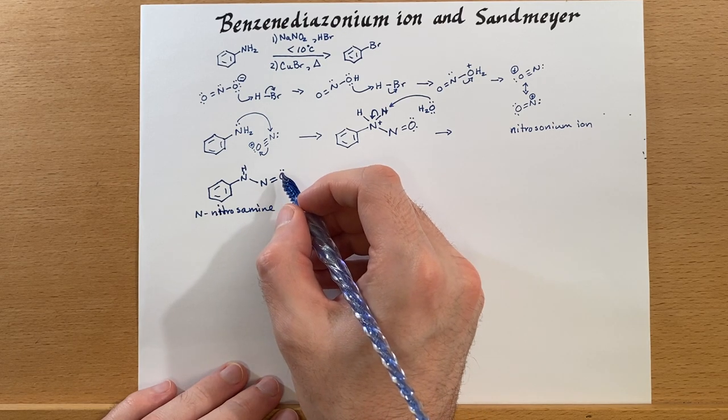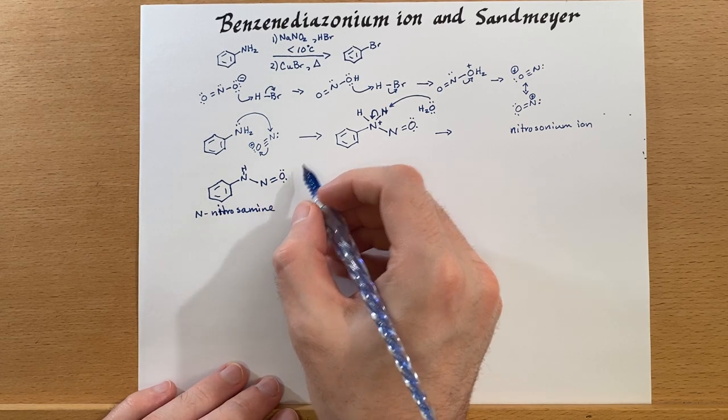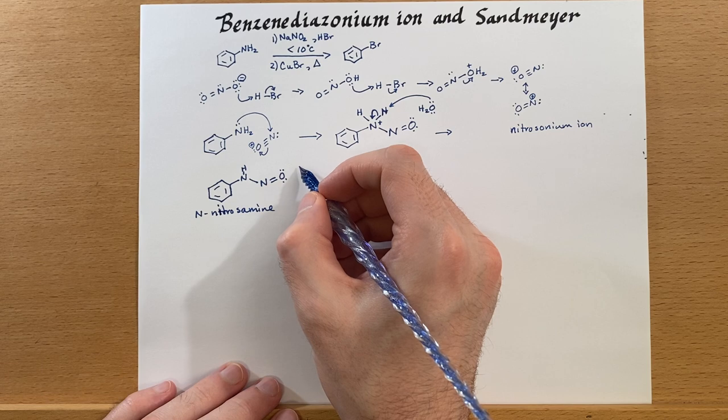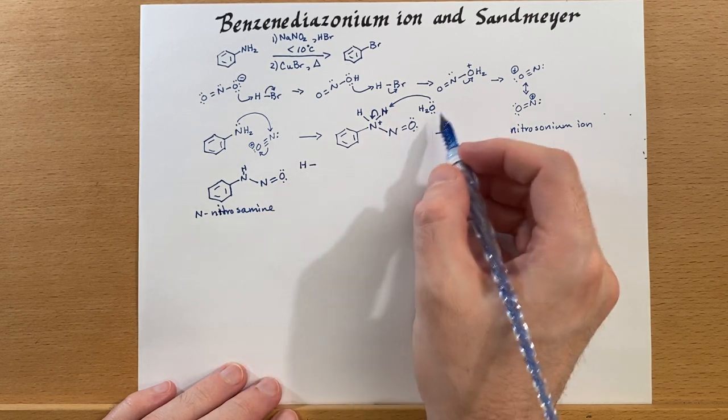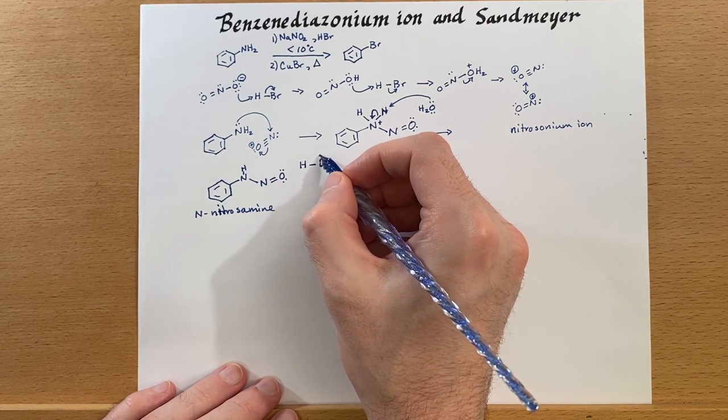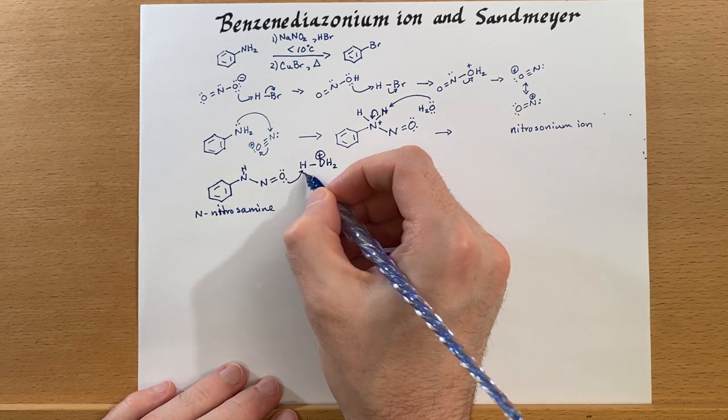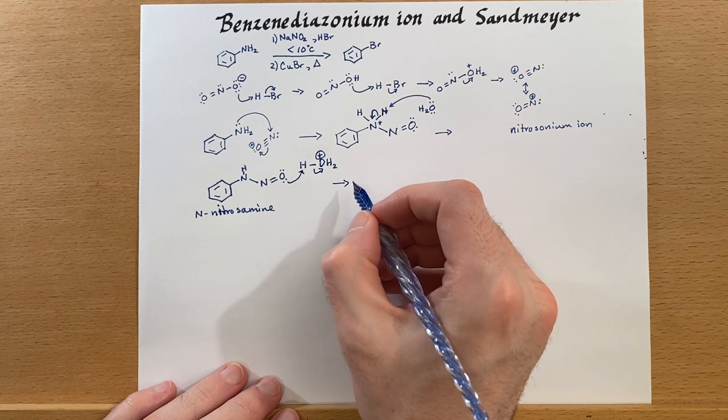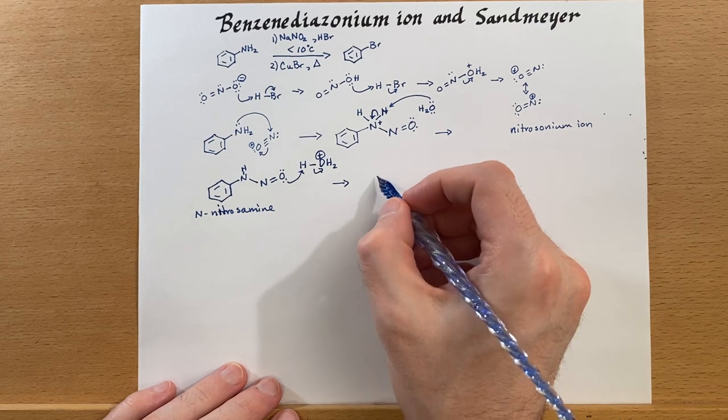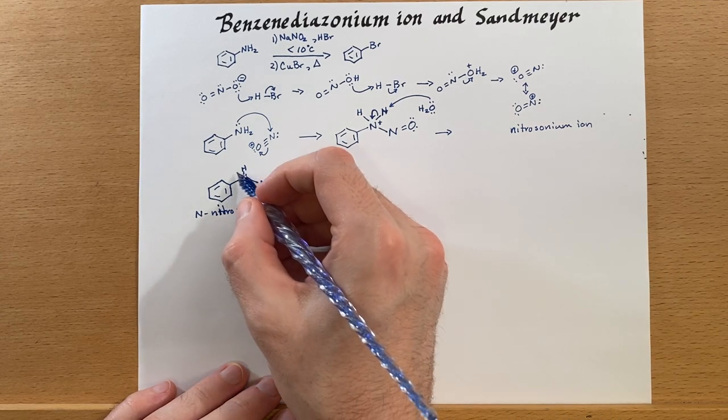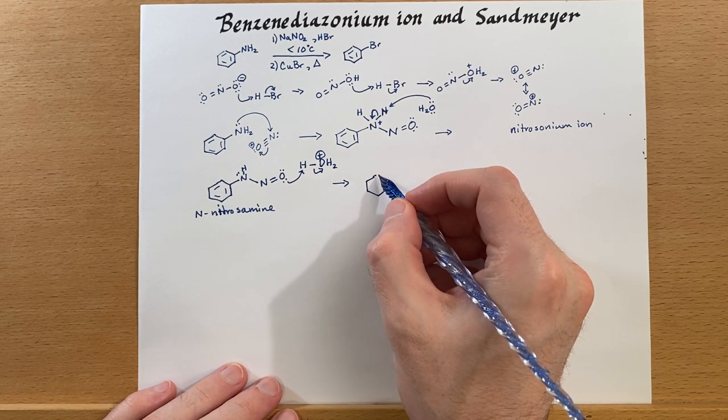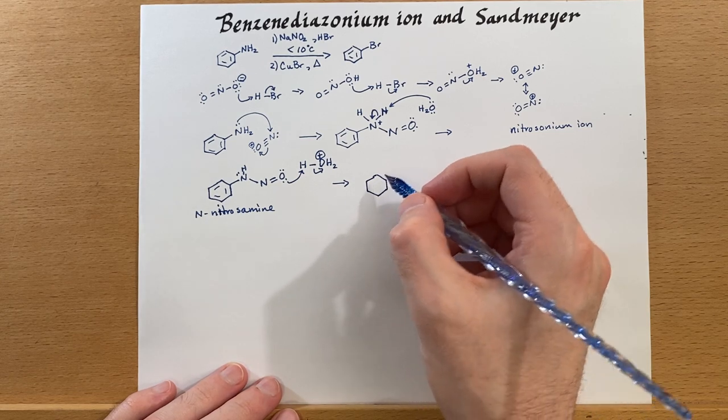Next, we're going to shuttle that proton over onto the oxygen here because we're going to want to remove this oxygen during this process. So we've got the protonated water somewhere here in the solution. We'll use that. And then after we do that, we're going to transfer some electrons in between the two nitrogens here.